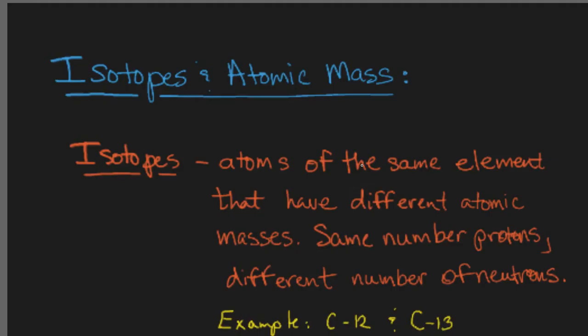What is an isotope? Isotopes are atoms of the same element that have different atomic masses. If they're of the same element, we know that they have to have the same number of protons. But they do differ in their number of neutrons.